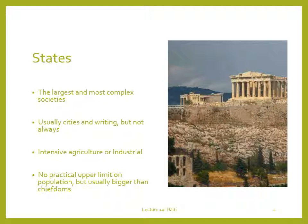Let's begin by reviewing just exactly what a state is. In the classification system developed by Elman Service, states are the largest and most complex societies that humans form. They're usually marked by the presence of cities and writing, but not always. They are always agricultural or industrial, because the number of people is large enough that simpler, less intensive subsistence strategies can't supply the people with enough food.